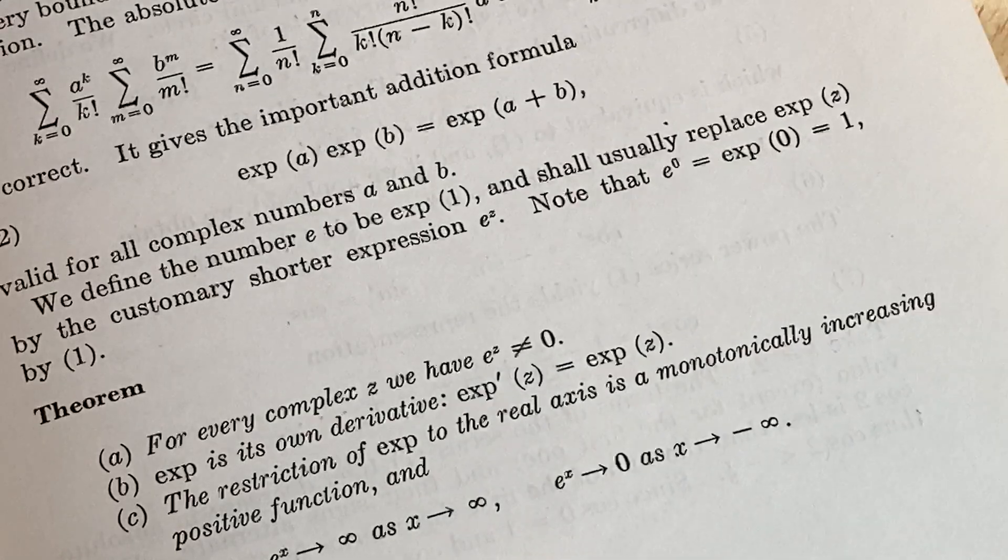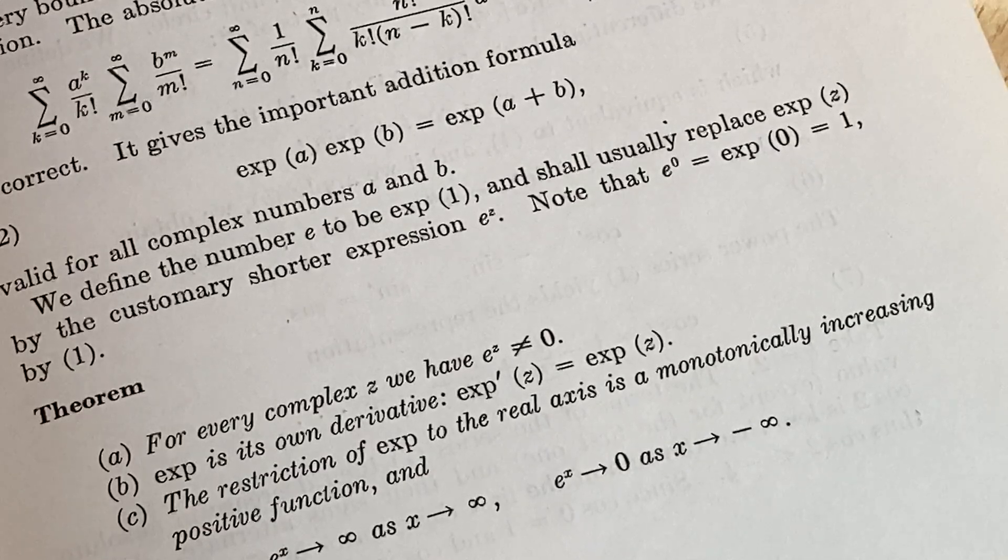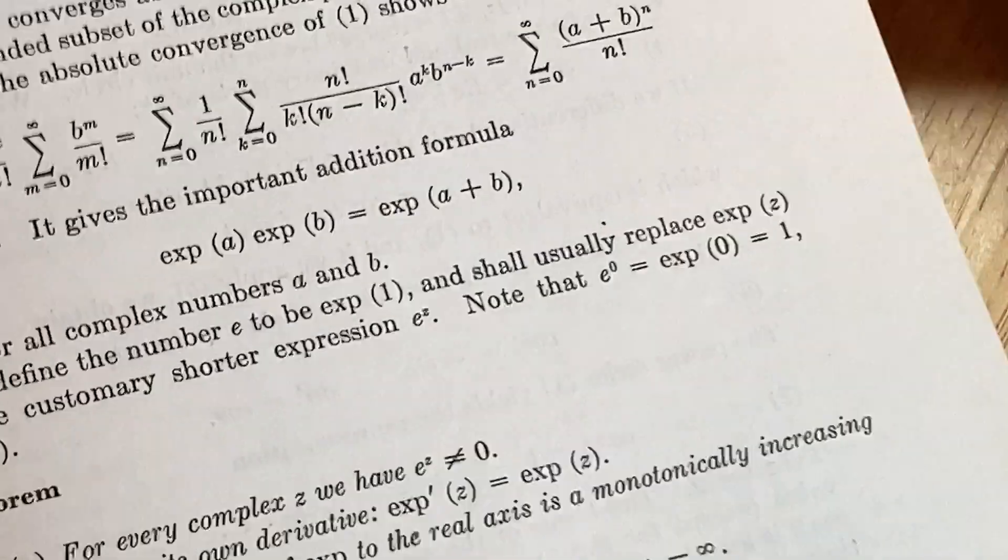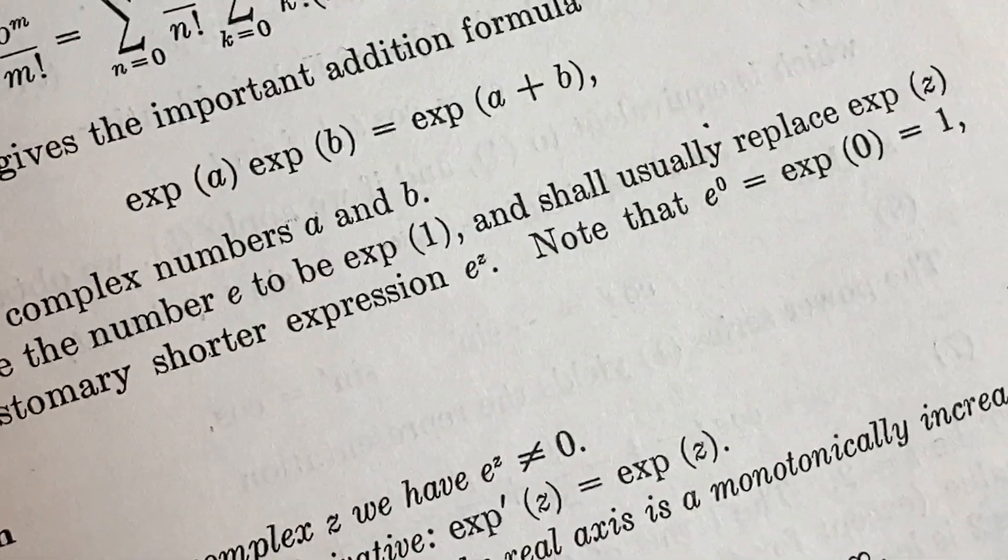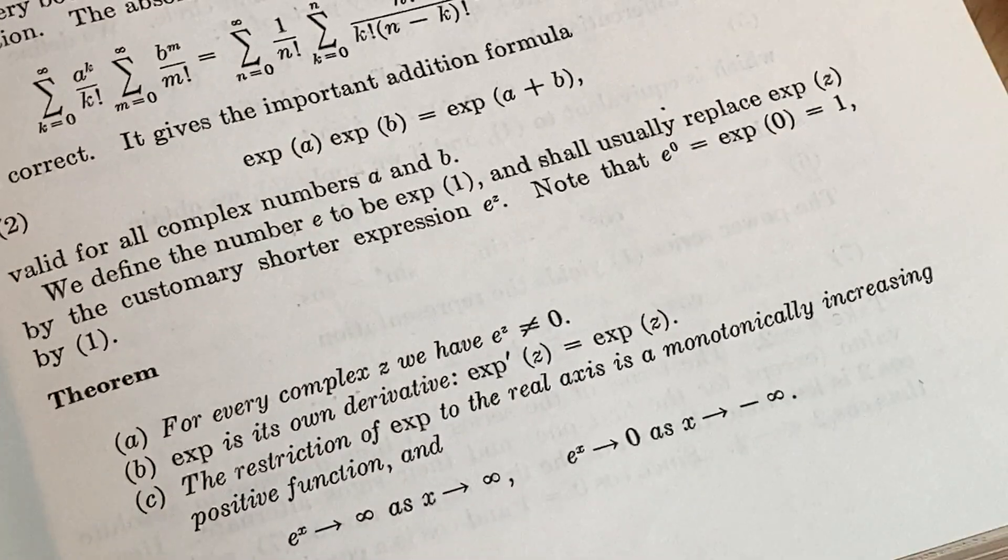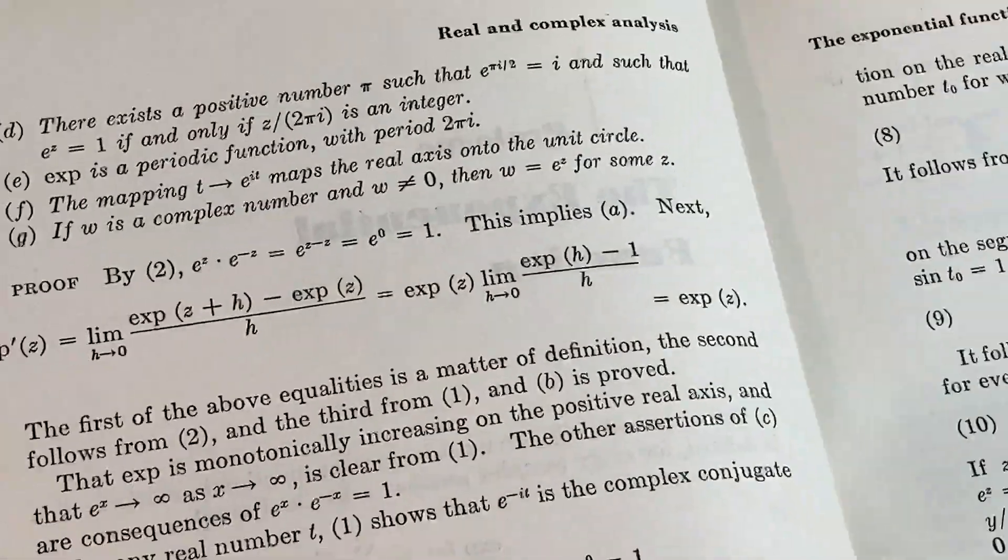We define the number e to be e to the z. So that's the notation you typically use. Then here's the theorem. Let's turn the page.